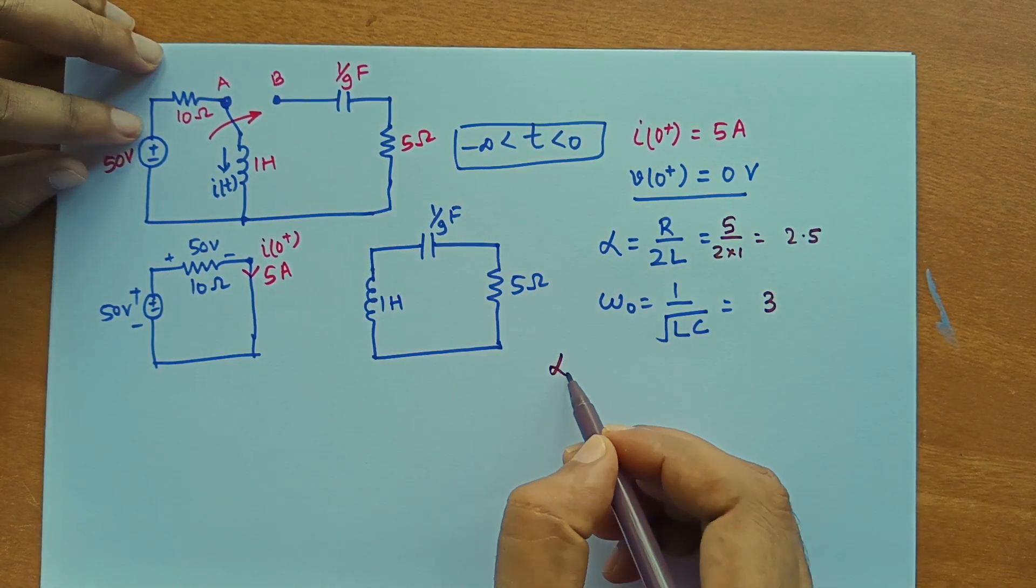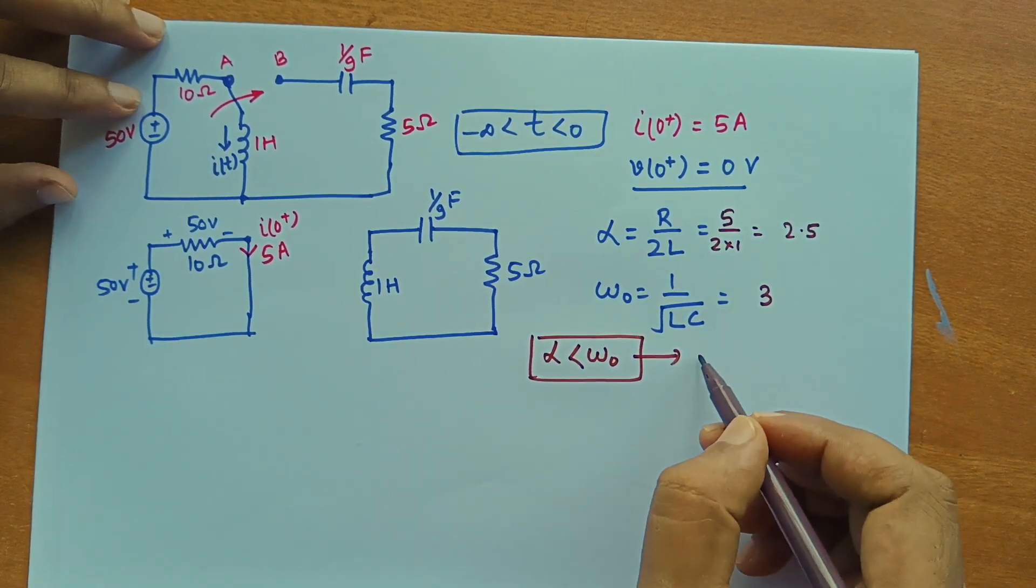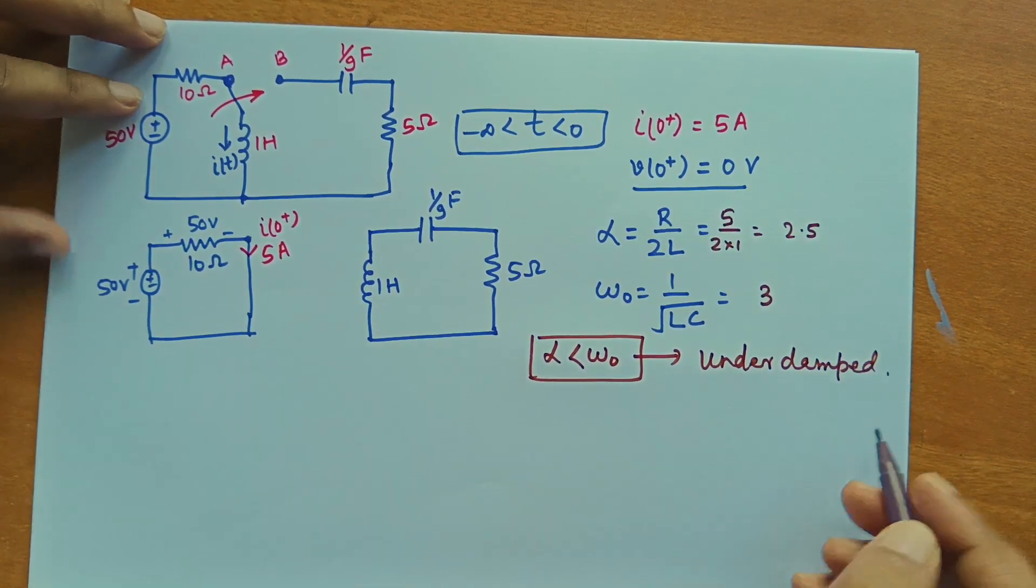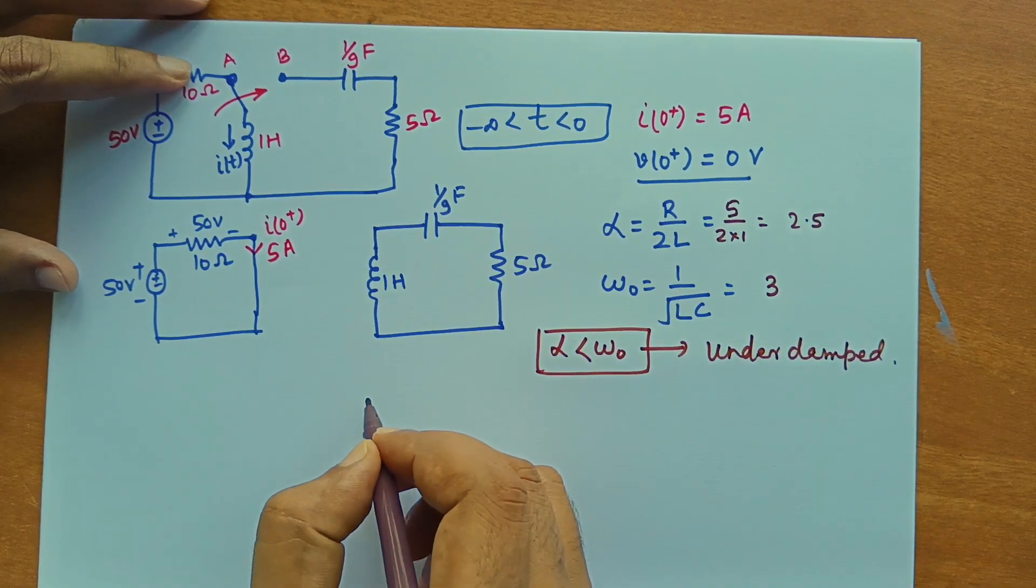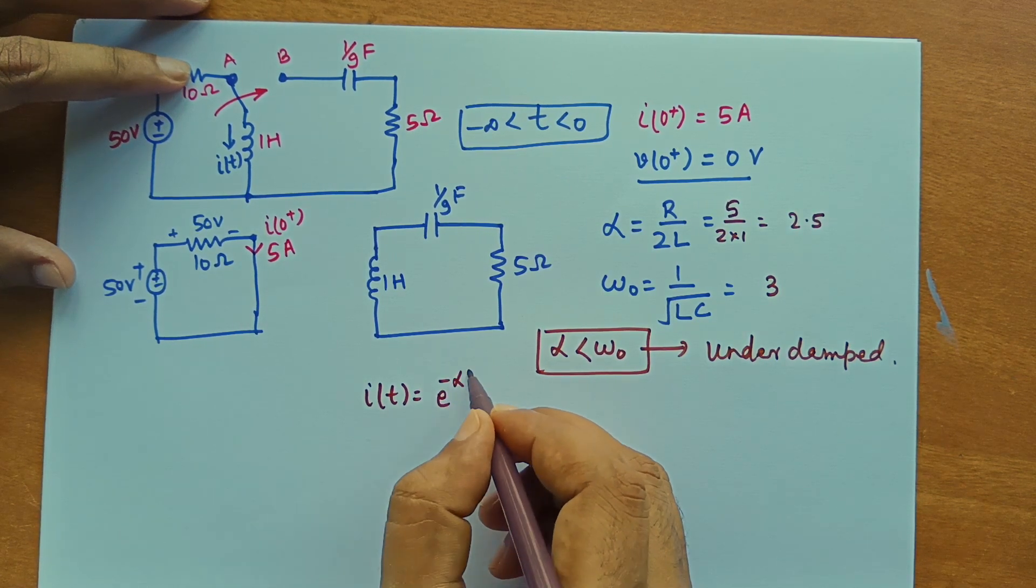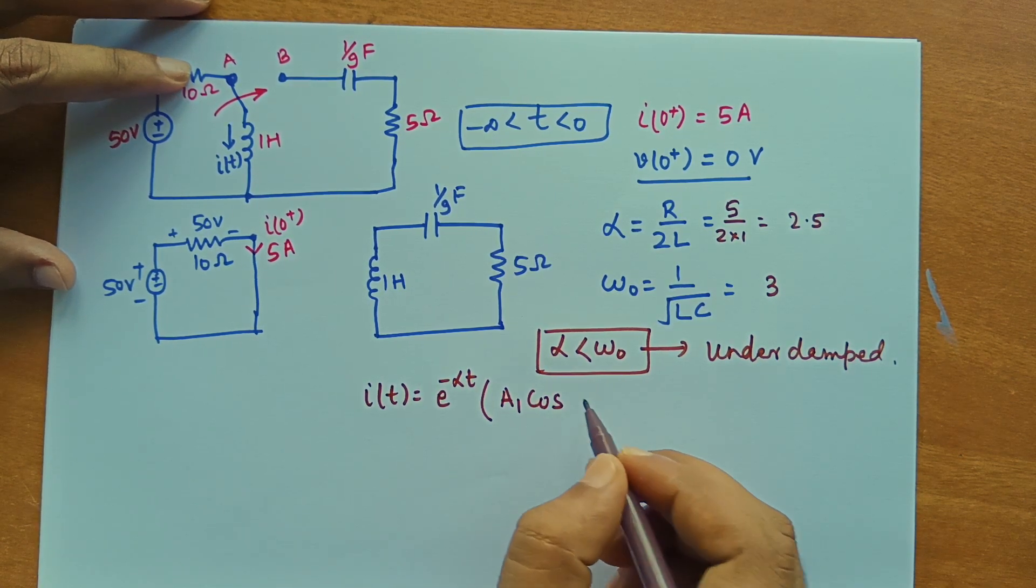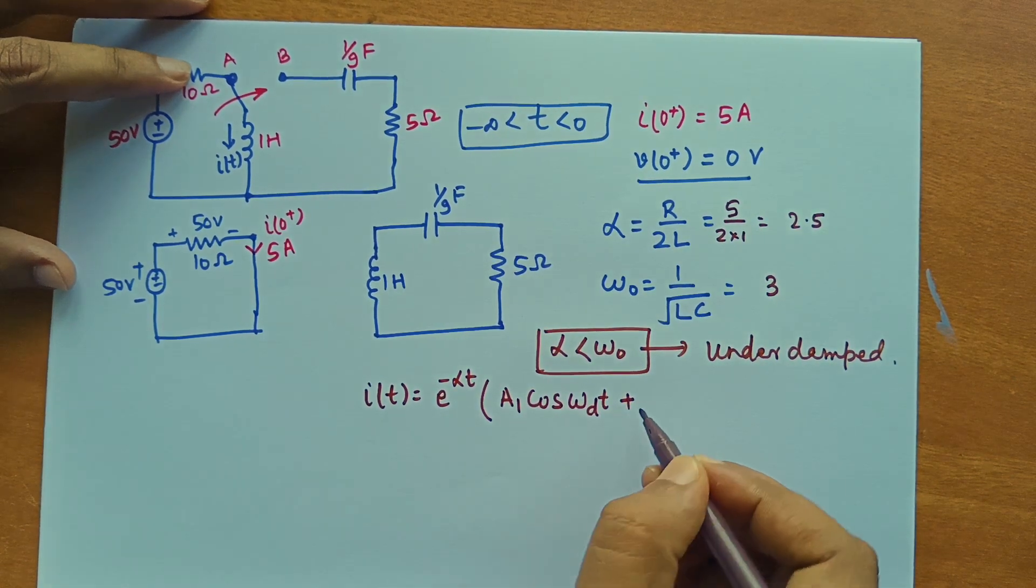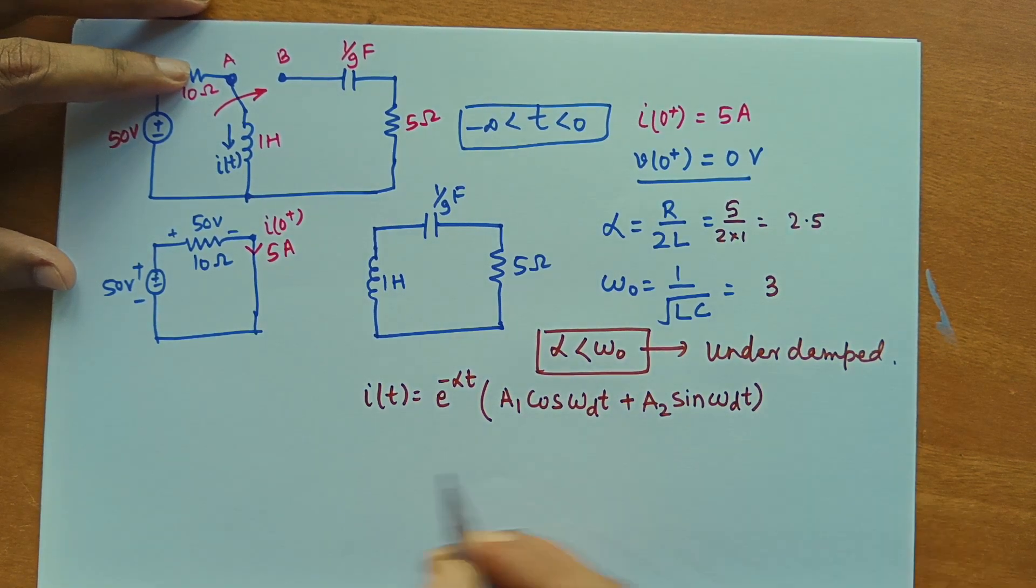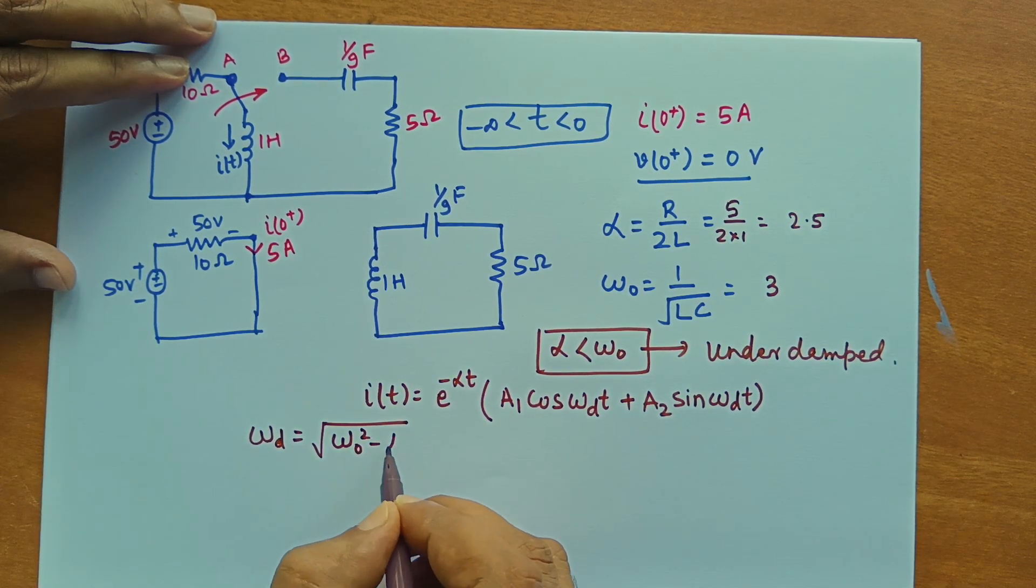This case is under damped. Under damped. And solution of this kind of under damped case will be I t equal to e to the power minus alpha t into A1 cos omega dt plus A2 sin omega dt where omega d is given by omega 0 square minus alpha square.